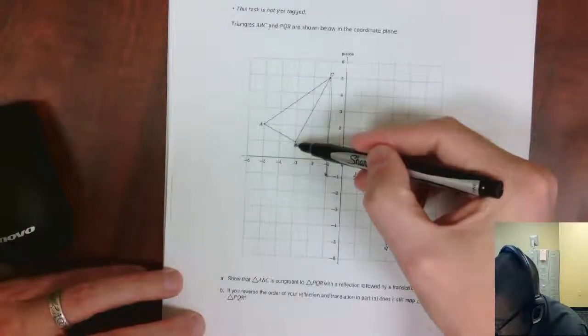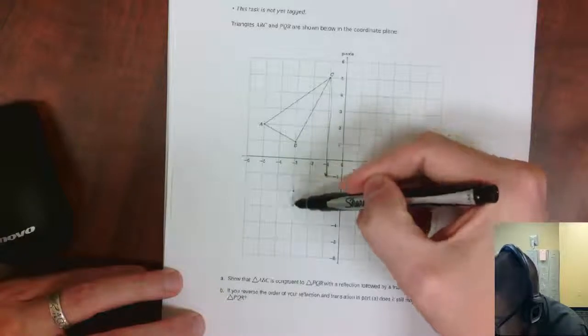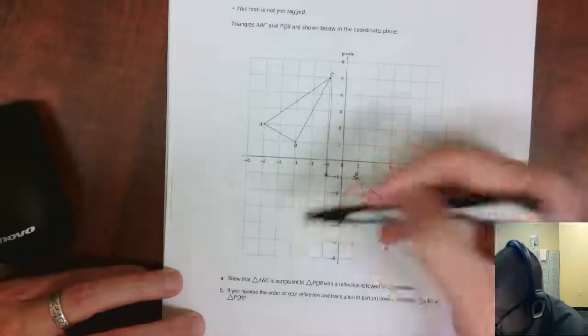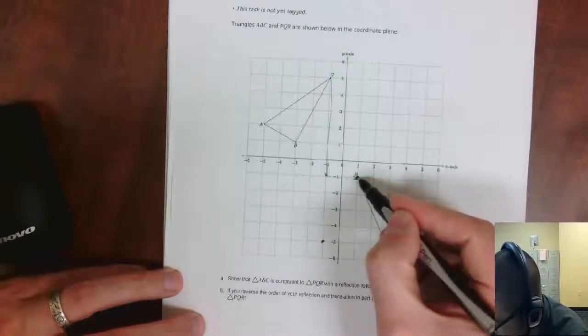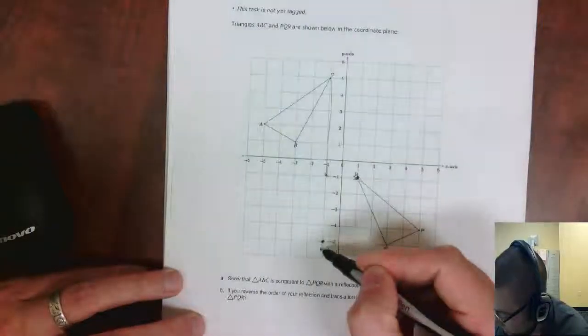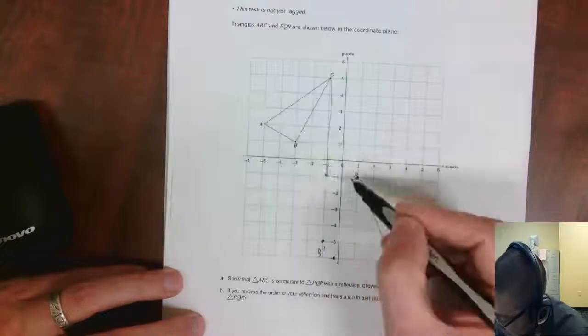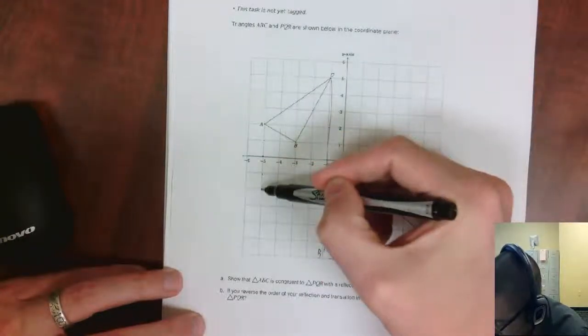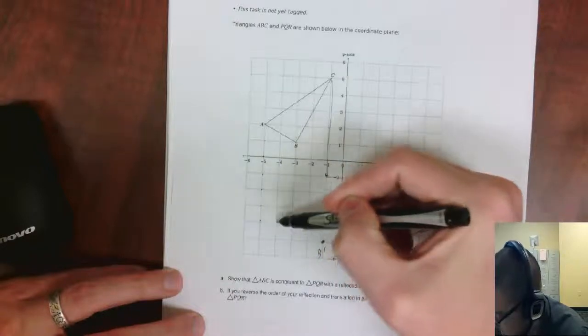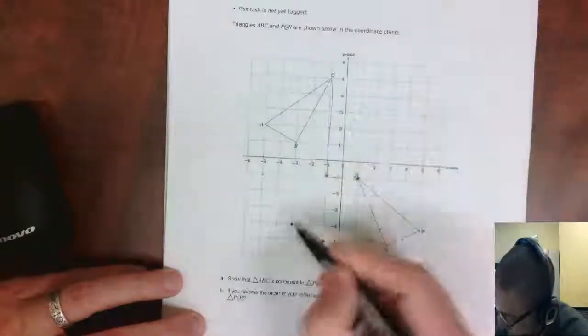Let's do the same thing with B. So 1, 2, 3, 4, 5, 6, over 2. So my new C point is already on R. This is B prime. And then A is going to go down 6. 1, 2, 3, 4, 5, 6, and over 2 to right there. So this is A prime.